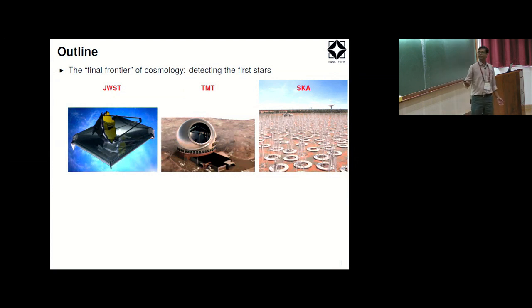In particular India is a big partner in the 30 meter telescope which is an optical and then the square kilometer array which is radio. Let me just emphasize that all these things are going to go and try to detect the first stars or the universe around those times, the so-called final frontier.